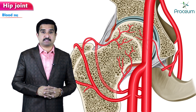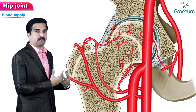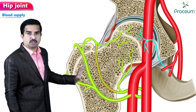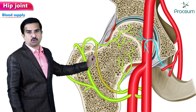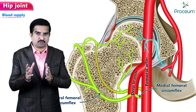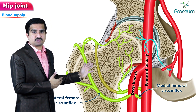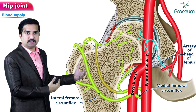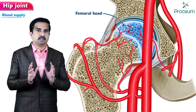Now let us concentrate on the blood supply of the hip joint. Two sets of arteries contribute to the vascularization of the joint capsule. The major contributing arteries are the medial and lateral circumflex arteries, which arise from the deep branch of the femoral artery — so the femoral artery has the major contribution. The minor contribution is from the artery of the head of the femur.